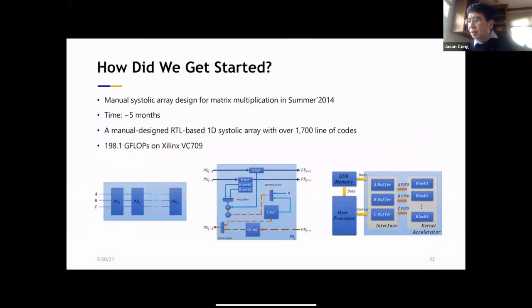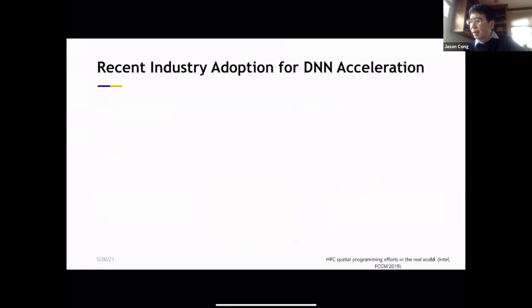I can tell you how we got started. Back in 2014, oh, by the way, I should mention that the Google TPU is also using a systolic array. So without knowing that, back in 2014, one graduate student was looking at systolic design manually. He spent about five months, and this is on the FPGA, and ended up with 17,000 lines of code. Just to do a simple matrix multiplication design. At the end, we do get a very good result that this is about 200 giga flops on the Xilinx VC7 series FPGA.